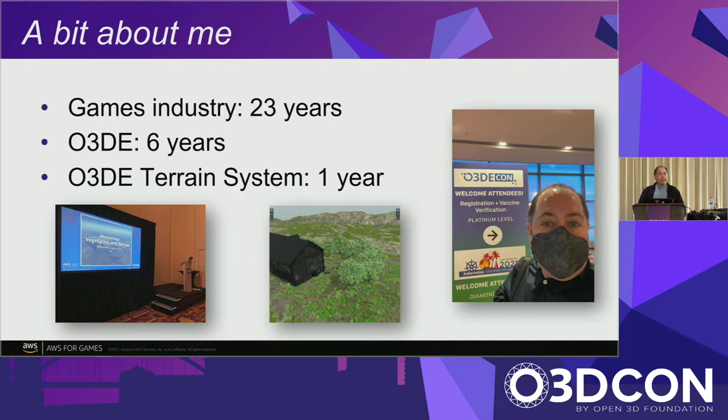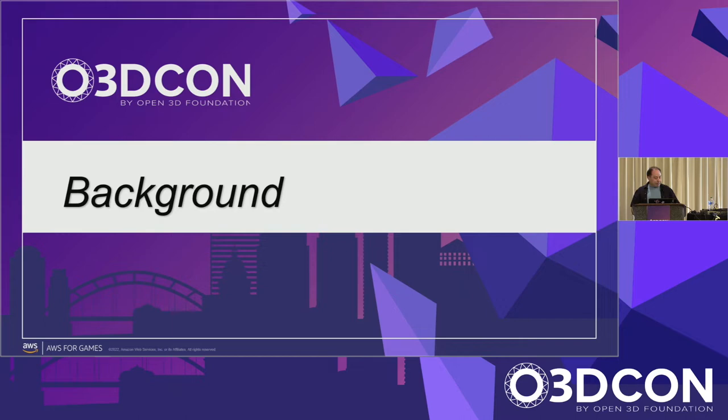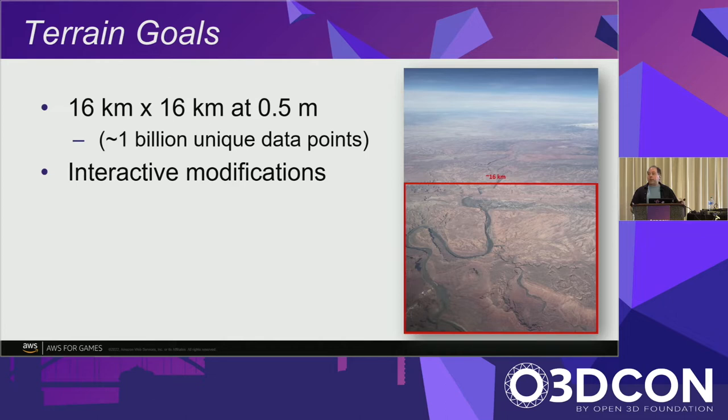Going back a year ago to last year's O3DEcon, we were showing very early versions of the terrain system right as we were starting to work on it. The goals we've had for the terrain system from the start — two are particularly pertinent here. First, we have always wanted the terrain system to be dynamic — modifiable at runtime as much as it could be in the engine, and for that to be performant and interactive.